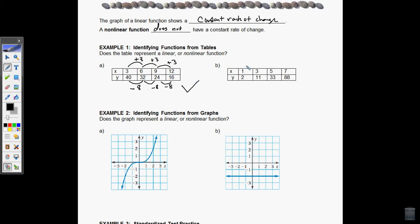Now, let's look at this one. I go from 1 to 3, which is plus 2. I go from 3 to 5, which is plus 2. And I go from 5 to 7, which is plus 2. Now, on the y's, I'm going from 2 to 11, which is plus 9. I go from 11 to 33, which is plus 22. I go from 33 to 88, which is plus 55. The x's are all increasing at a constant rate, but the y's are not, adding 9, adding 22, adding 55. So this is not linear. Both the x and the y do not increase at constant rates.